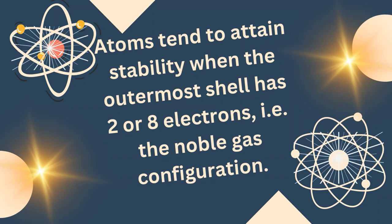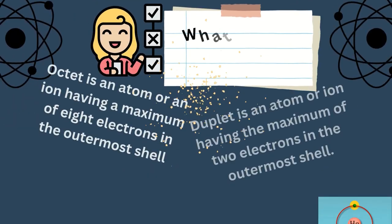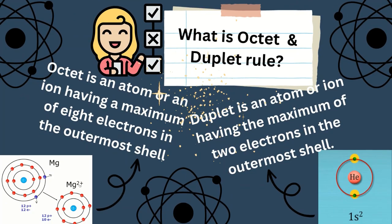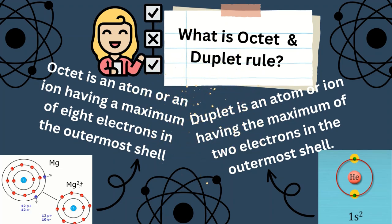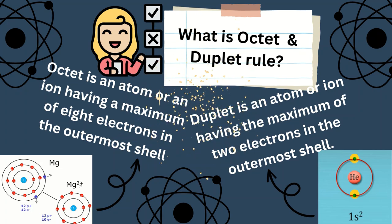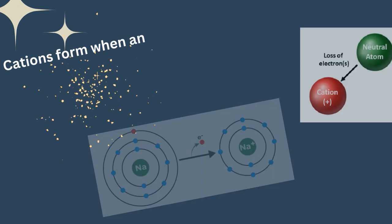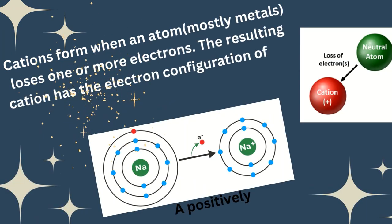Atoms tend to attain stability when the outermost shell has two electrons or eight electrons, like the noble gas configuration. What is the octet and duplet rule? Octet is an atom or ion having a maximum of eight electrons in the outermost shell. Duplet is an atom or ion having a maximum of two electrons in the outermost shell.